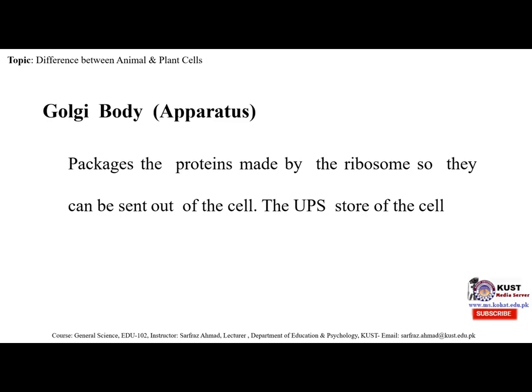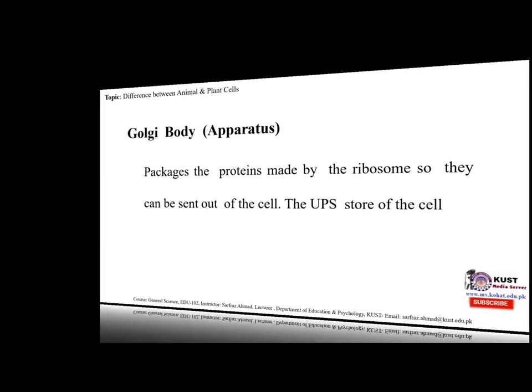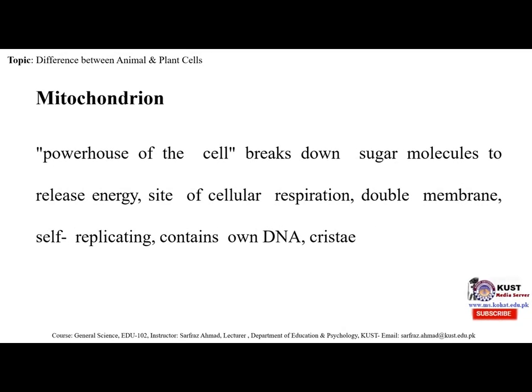As secretory proteins move through the Golgi apparatus, a number of chemical modifications may transpire, most importantly the modification of carbohydrate groups. Secretory vesicles within the Golgi also contain proteases that cut many secretory proteins at specific amino acid positions. The next organelle is mitochondria — the powerhouse of the cell — which breaks down sugar molecules to release energy. It is the site of cellular respiration, has a double membrane, is self-replicating, and contains its own DNA with cristae.